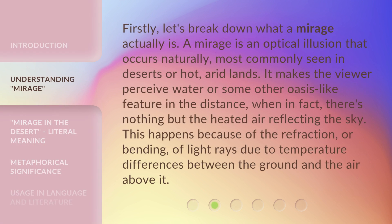Firstly, let's break down what a mirage actually is. A mirage is an optical illusion that occurs naturally, most commonly seen in deserts or hot, arid lands. It makes the viewer perceive water or some other oasis-like feature in the distance, when in fact there's nothing but the heated air reflecting the sky.